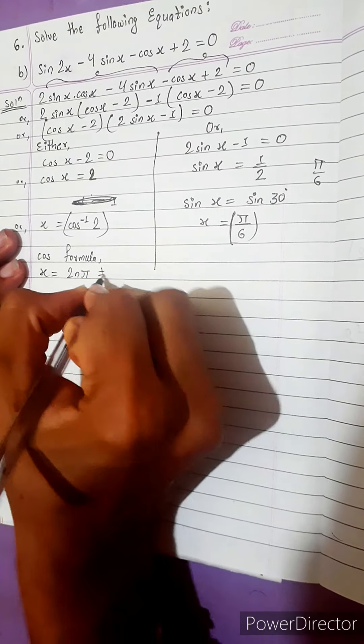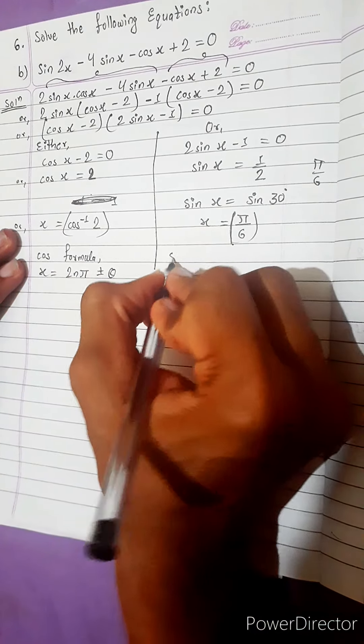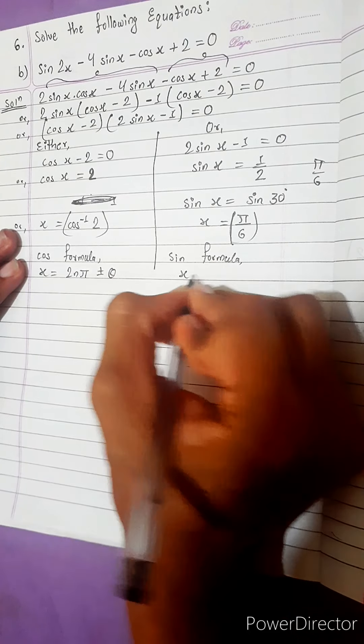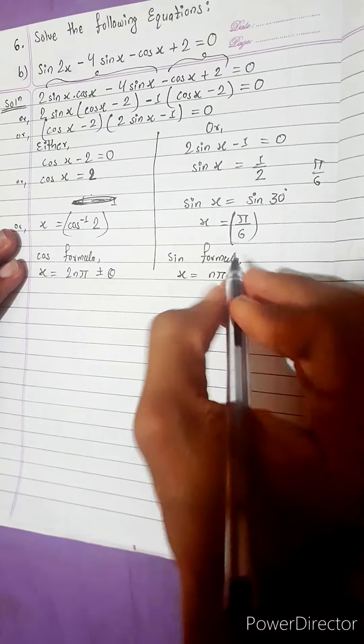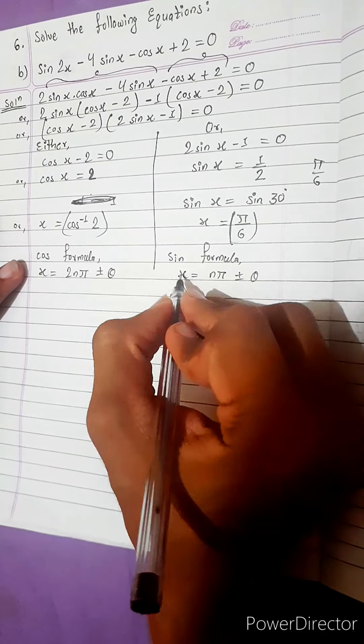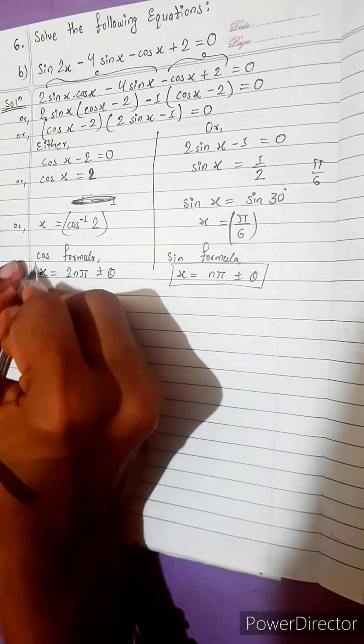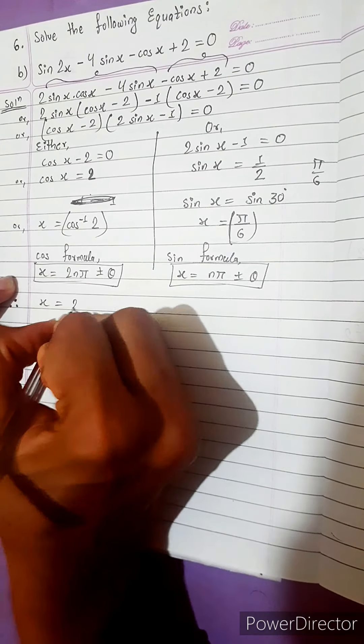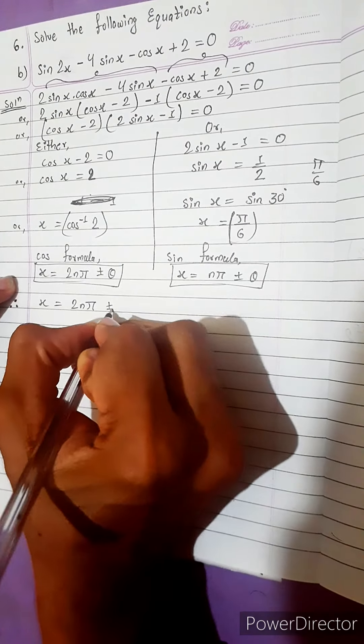We know the formula. In terms of cos, formula is x equals to 2 n pi plus minus theta. In terms of sin, formula for general solution is x equals to n pi plus minus theta.